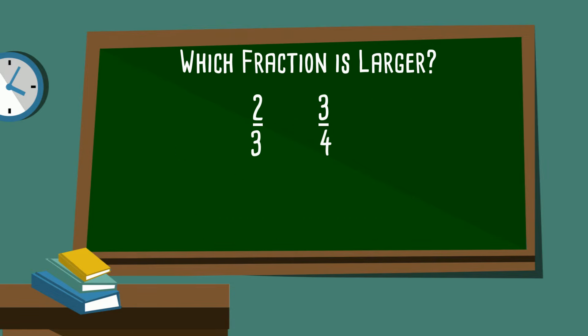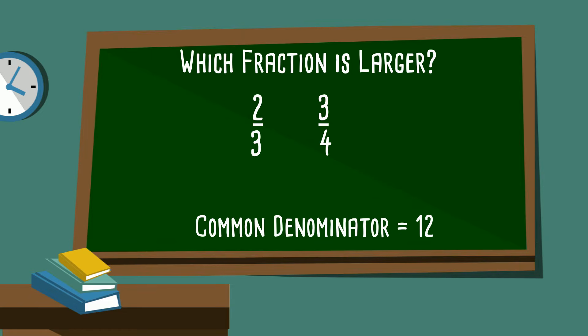What about these two fractions — two-thirds and three-fourths, which is larger? Just by looking at them it's kind of hard to tell, so let's find a common denominator. The common denominator of three and four is twelve. Three goes into twelve four times, so three times four is twelve, and two times four is eight.